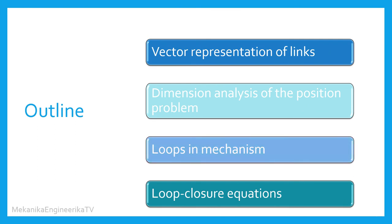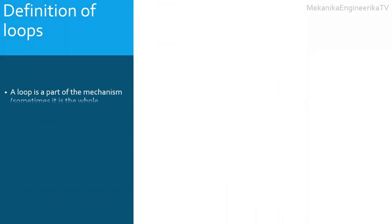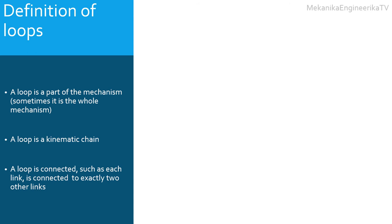Now we move to the third part, which introduces loops. Loops are very important in analyzing the position of a mechanism and will be used to write the required independent algebraic equations. A loop is a part of the mechanism — a mechanism can contain one, two, or more loops, and sometimes the whole mechanism draws only one loop. A loop is a kinematic chain built from links connected together using kinematic pairs or joints. It may or may not contain the ground. A loop is a kinematic chain where each link is connected to exactly two other links.